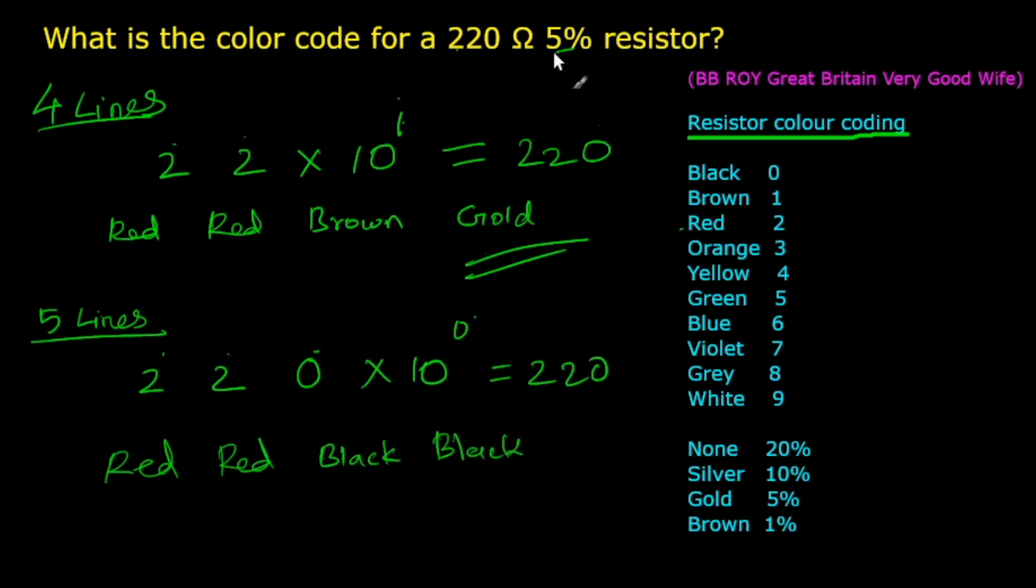The last digit is for tolerance value. Color code for 5% is gold. So the answer is red, red, black, black, gold.